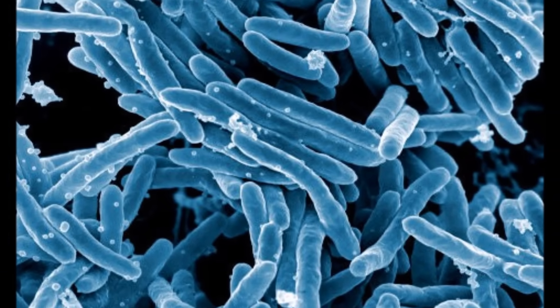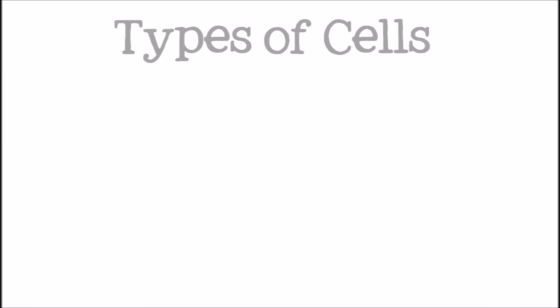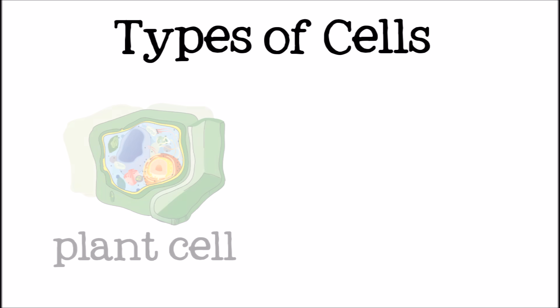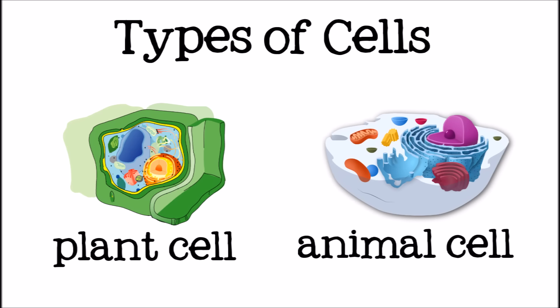Although there are many, many different types of cells that all have different jobs to do, most cells have some things in common. For now, we will be dealing with two types of cells: plant cells and animal cells.